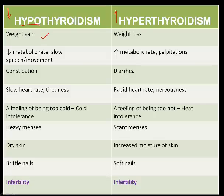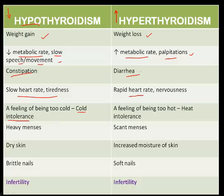Whereas in hyperthyroidism, it increases — you have weight loss. The metabolism slows down; you have slow speech, slow movement, slow memory — everything slows down in hypo. Whereas in hyper, you have increased metabolic rate, palpitations, nervousness. Your bowels slow down — you have constipation in hypo. Your bowels speed up — you have diarrhea in hyper. Slow heart rate and tiredness in hypo. Rapid heart rate and nervousness in hyper. And another peculiar thing: you have cold intolerance in hypo — you cannot tolerate cold, always wrapped up — whereas you have heat intolerance in hyper. Heavy menses for women in hypo; scant menses in hyperthyroidism. You have dry skin and brittle nails in hypo; whereas in hyper, you have moist skin and soft nails.